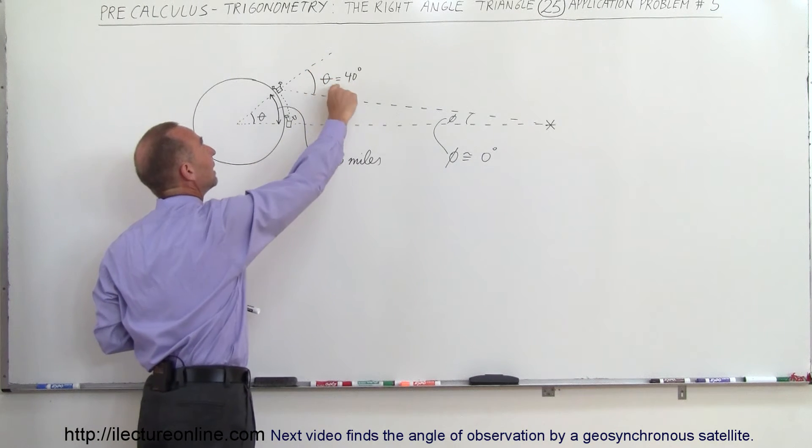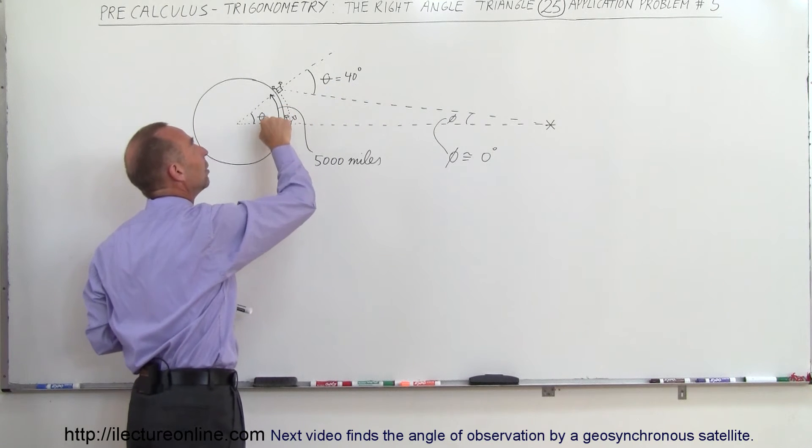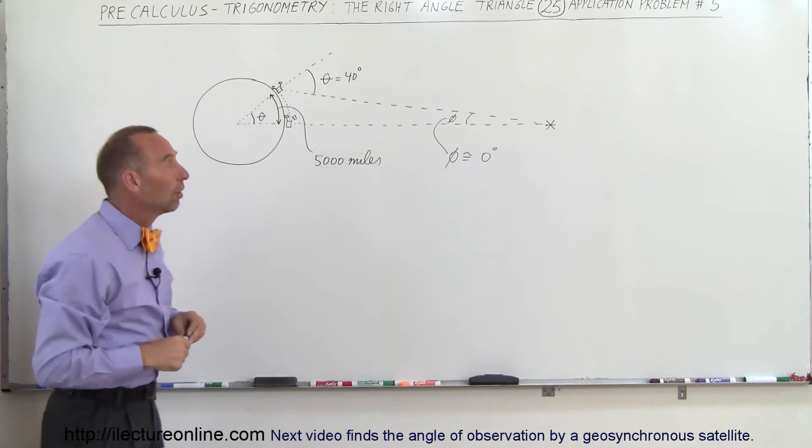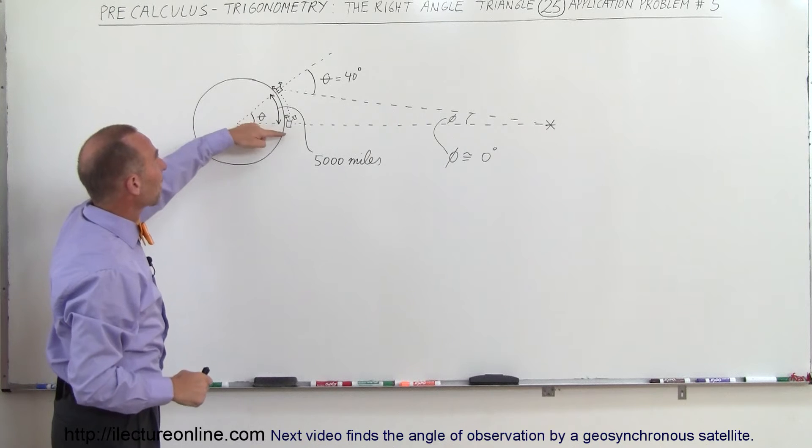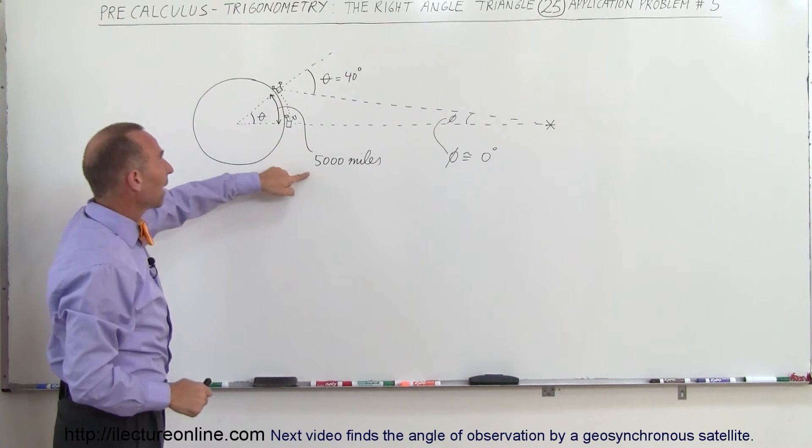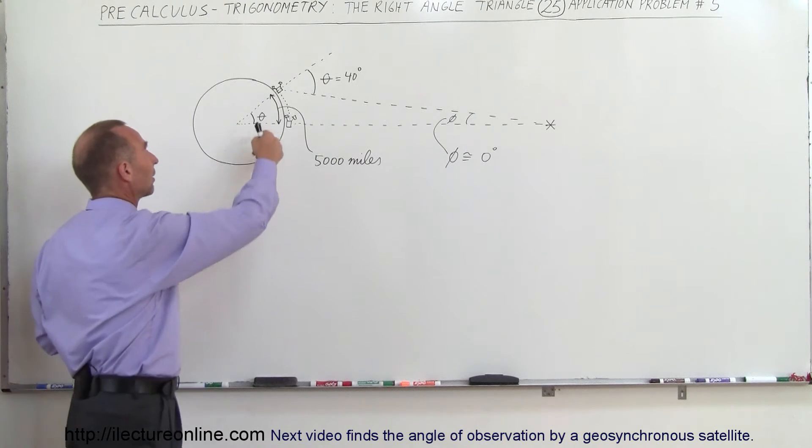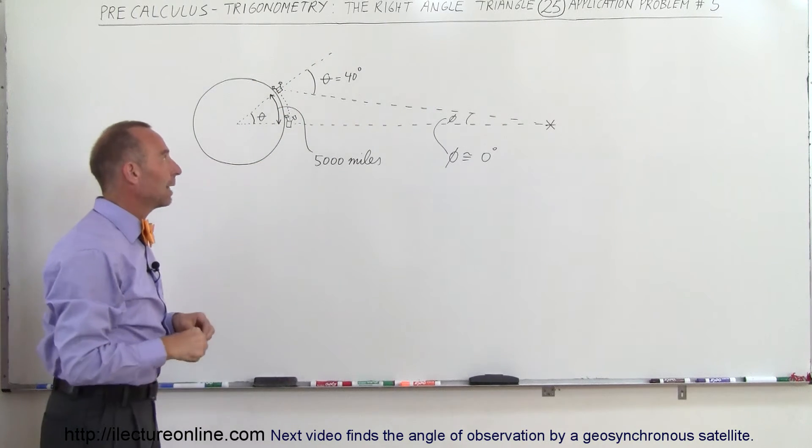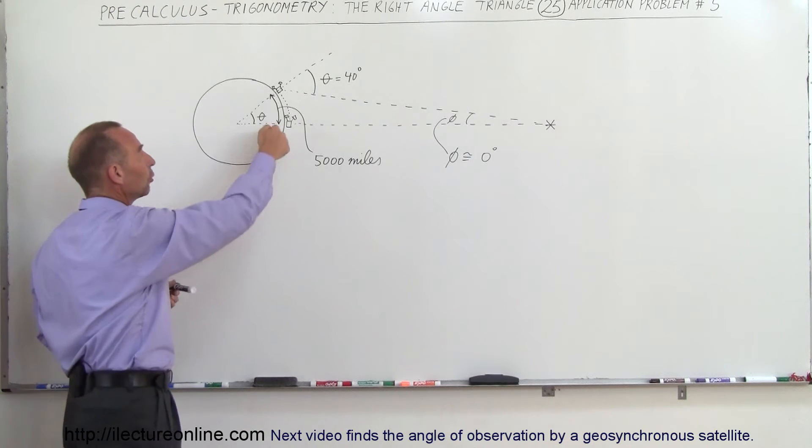If it's a faraway star, these two lines will be basically almost parallel to one another, which means that this angle here, theta equal to 40 degrees, would be equal to this angle right here, theta also equal to 40 degrees. Which means that we've traveled around the planet a distance of 5,000 miles.